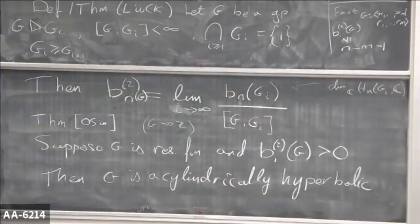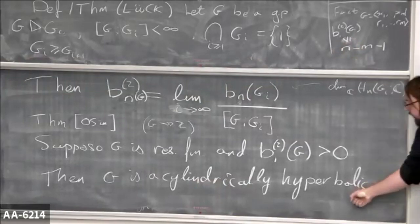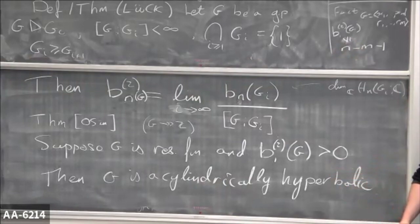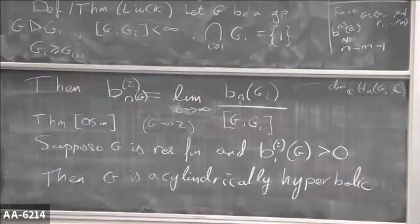Non-vanishing gives you nice actions and tells you things about free subgroups. You could also pull this back to say: if you have a group that isn't acylindrically hyperbolic, you know something about the Betti number. Or if you have a group that doesn't have free subgroups — say a soluble group, an amenable group, or a group satisfying a law — then immediately the first L² Betti number vanishes.